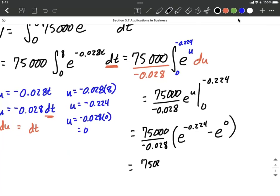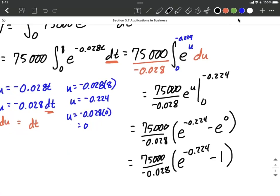So, 75,000 over negative 0.028, and then E raised to the negative 0.224, minus 1. E to the 0 power is going to be 1.